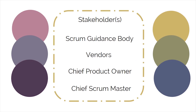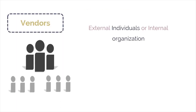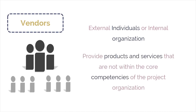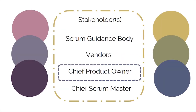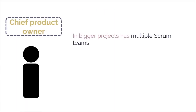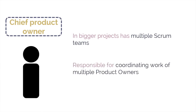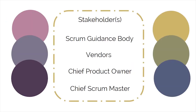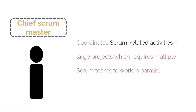The next non-core role is played by vendors — external individuals or internal organizations that provide products or services not within the core competencies of the project organization. The chief product owner is another non-core role, relevant for large projects that have multiple Scrum teams. The chief product owner is responsible for coordinating the work of multiple product owners. The last non-core role is the chief Scrum master, who is responsible for coordinating Scrum-related activities in large projects that may require multiple Scrum teams to work in parallel.